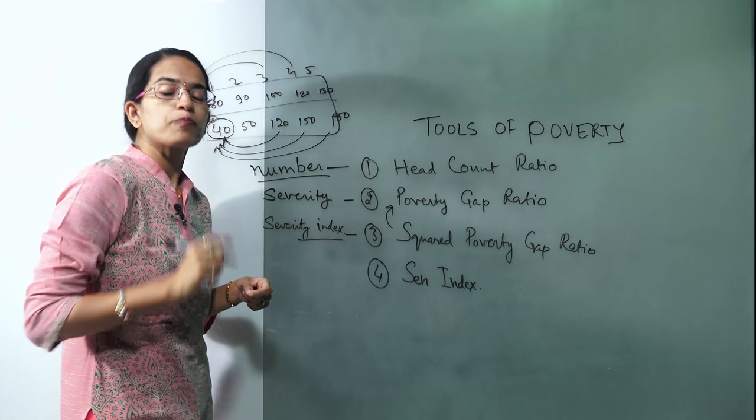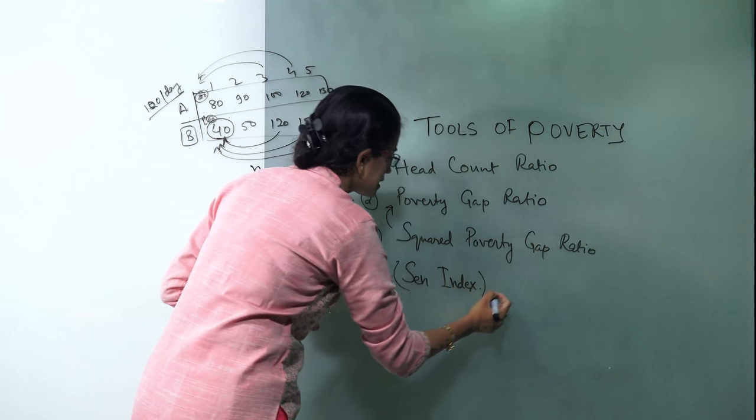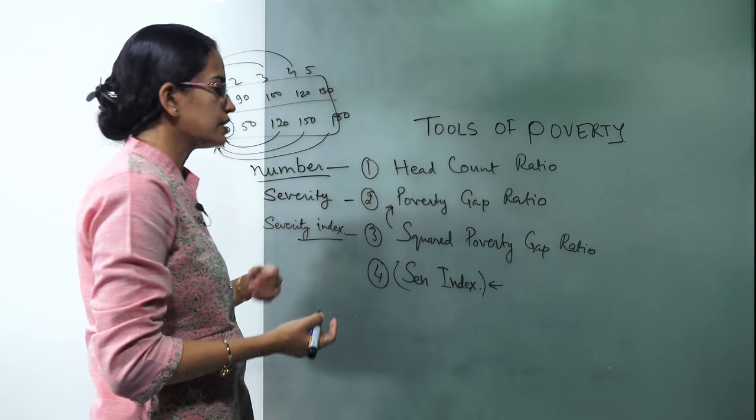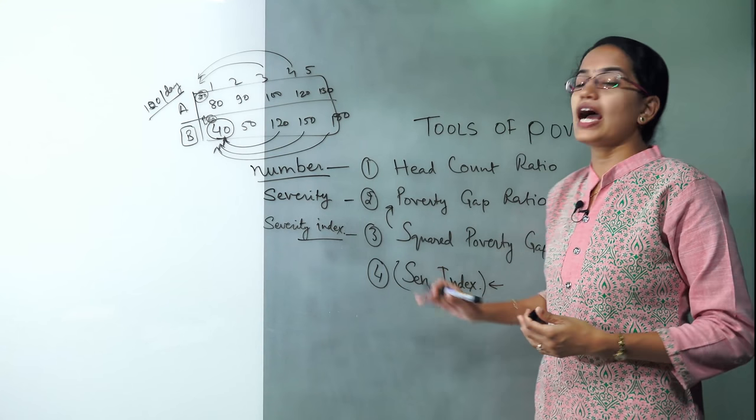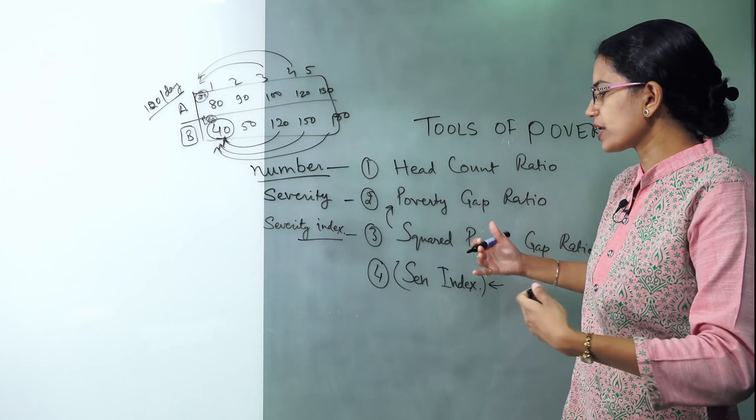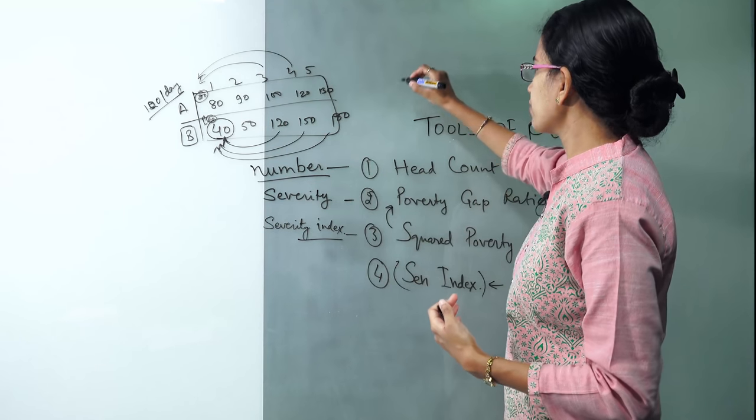The next is Sen's index. It has been named after Professor Amartya Sen who won the Nobel Prize in economics for his welfare economics. His idea was pretty unique. So what he did was he brought around three concepts - he talked about the number of poor people